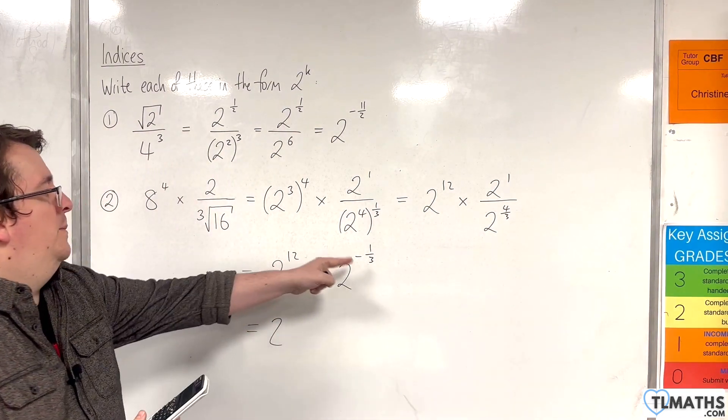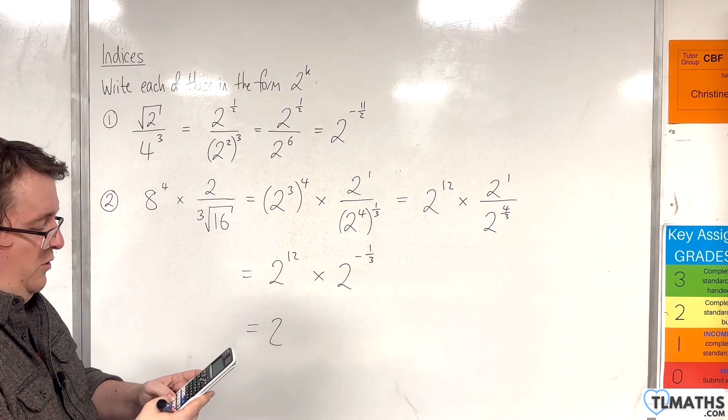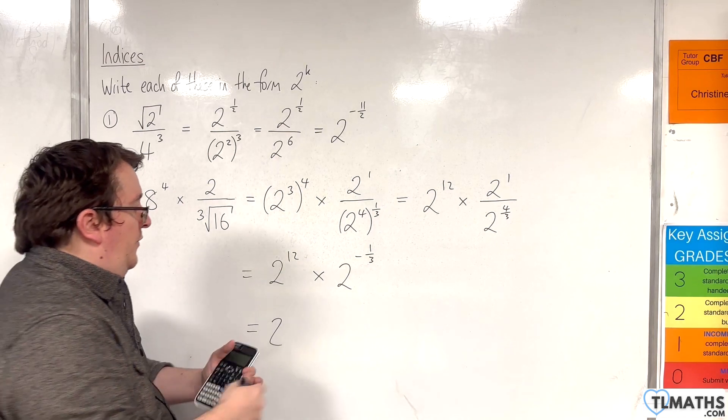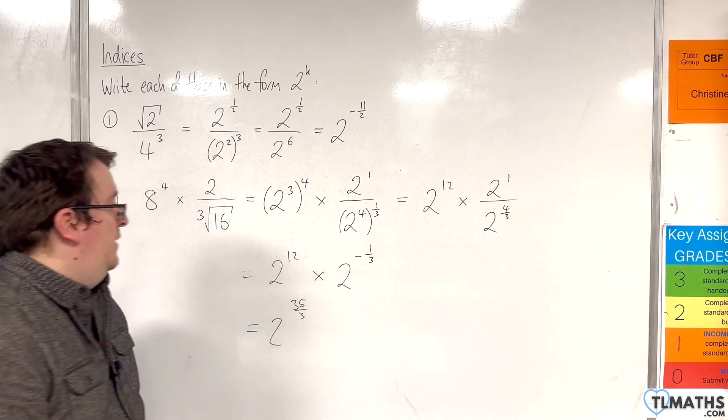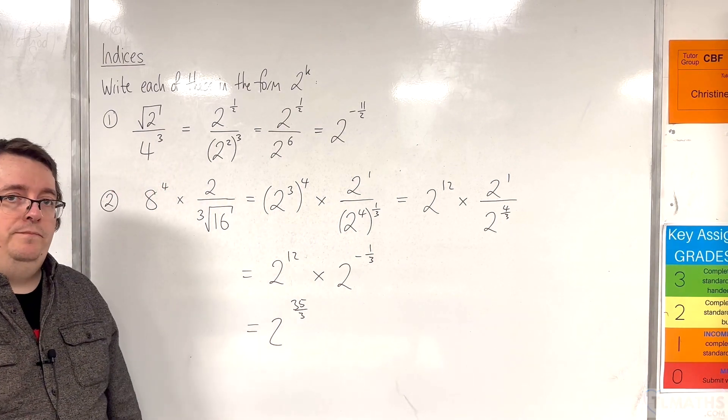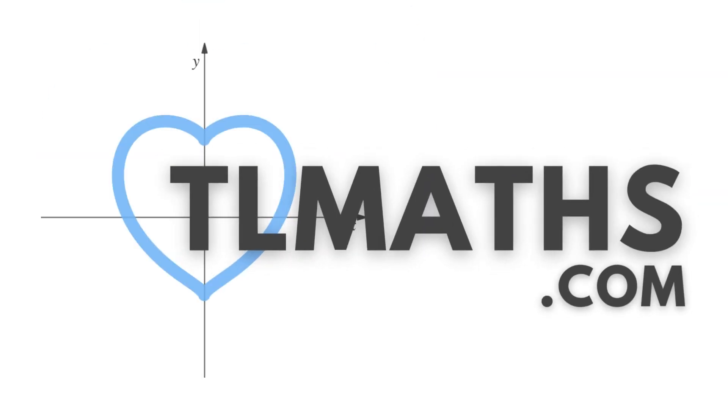So then we have 12 plus minus a third, so 12 take away a third is 35 thirds. So 2 to the power of 35 thirds is what we want. Let's move on. Thank you.